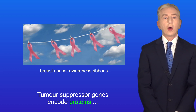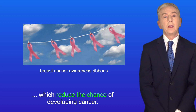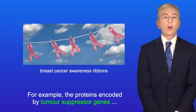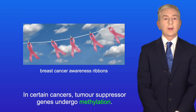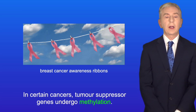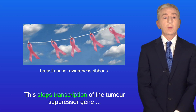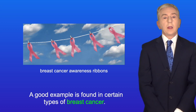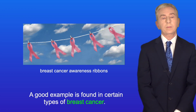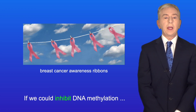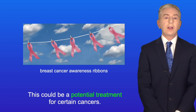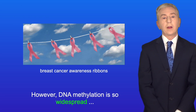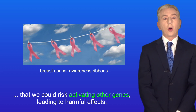Tumour suppressor genes encode proteins which reduce the chance of developing cancer — for example, the proteins encoded by tumour suppressor genes can be involved in repairing damaged DNA. In certain cancers, tumour suppressor genes undergo methylation, which stops transcription of the tumour suppressor gene, allowing the cancer to develop. A good example is found in certain types of breast cancer. If we could inhibit DNA methylation we could activate silenced genes, which could be a potential treatment for certain cancers. However, DNA methylation is so widespread that we could risk activating other genes, leading to harmful effects.